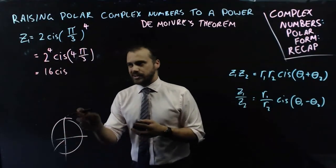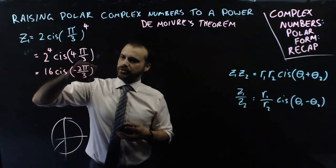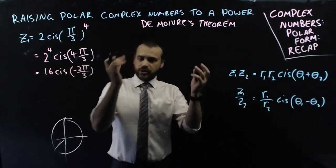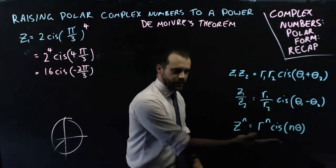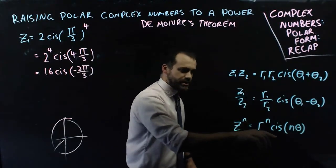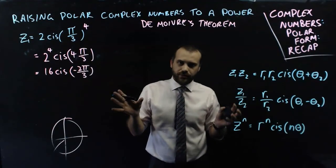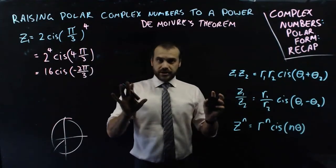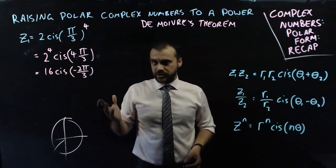Now of course you'll want De Moivre's formula. Which is a little something like this. Z to the n equals r to the n. Cis n theta. And then tidy it up. Make sure that you're being polite with your argument there. Complex numbers. Polar form. That's the full recap. Now let's learn some new stuff.